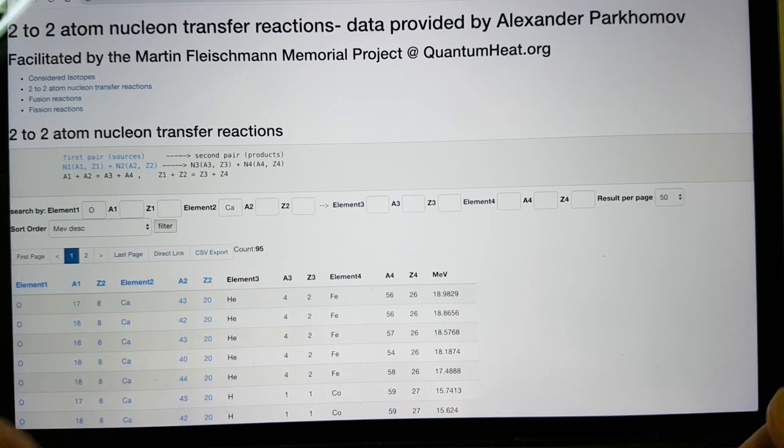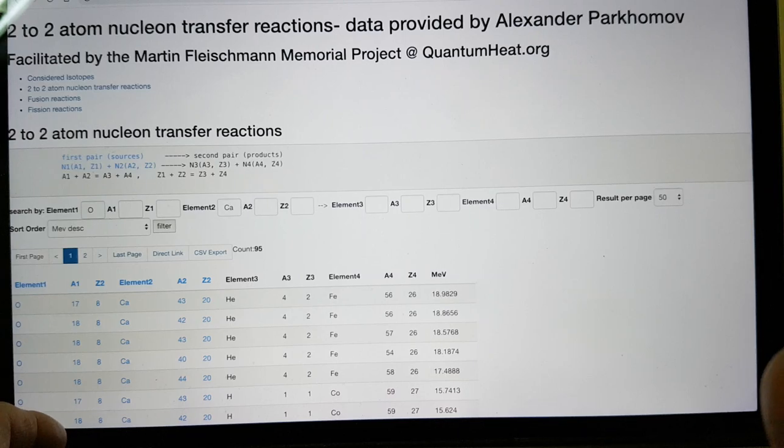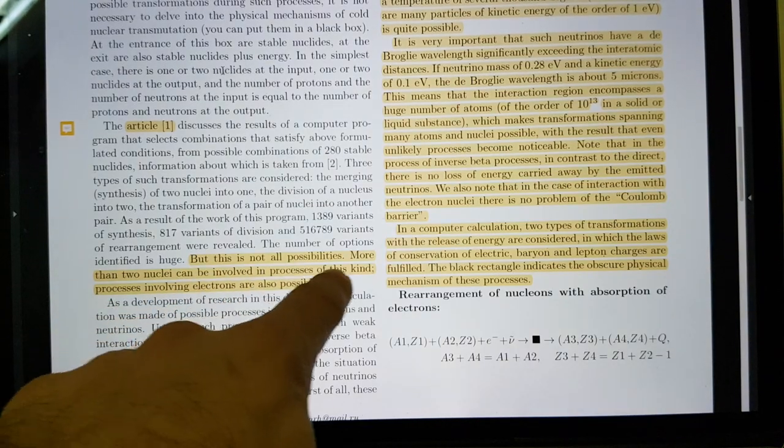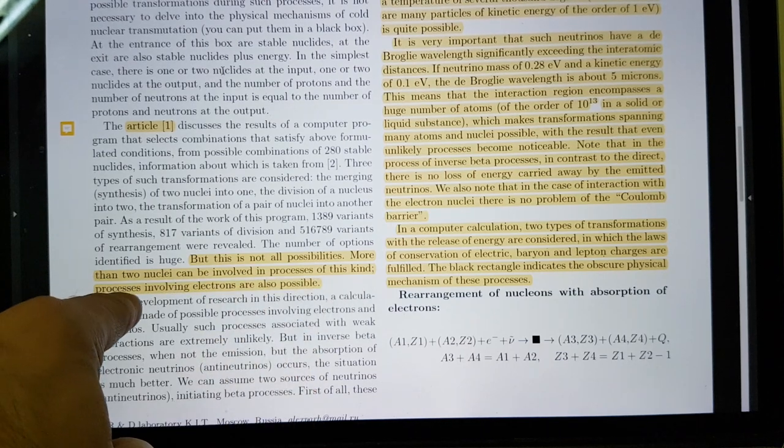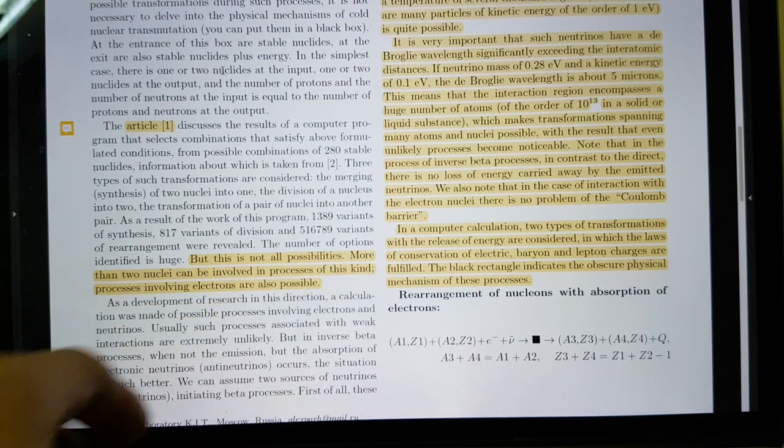This would actually be an alpha. Maybe the alpha would go on to do some other things. He recognizes that in his work, because he's saying, But this is not all the possibilities. More than two nuclei can be involved in the processes of this kind. Processes involving electrons are also possible.